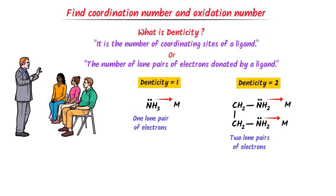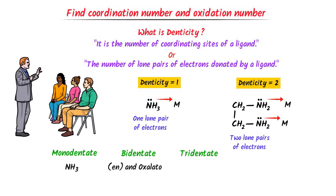On the basis of denticity, we have different types of ligands: monodentate, bidentate, tridentate, and so on. For example, NH3 is monodentate. EN and oxalato are bidentate. Diene is a tridentate.